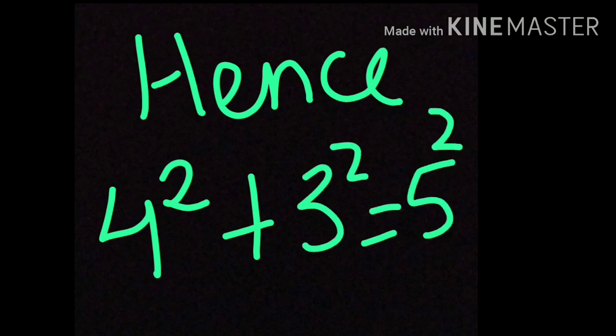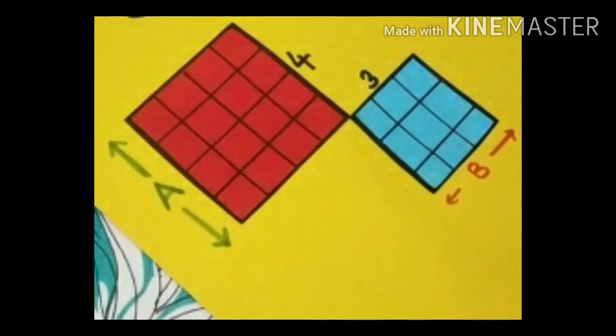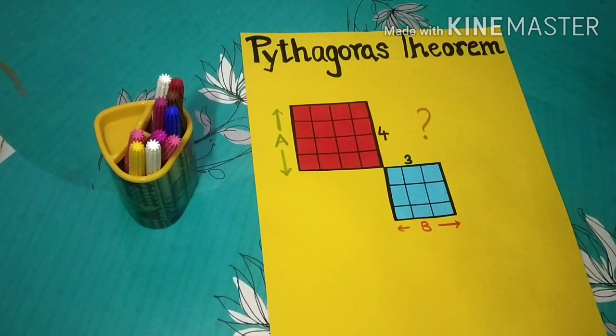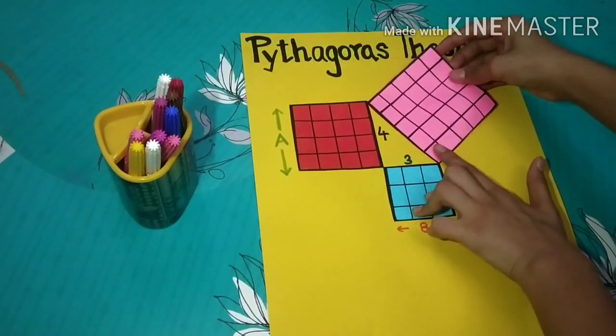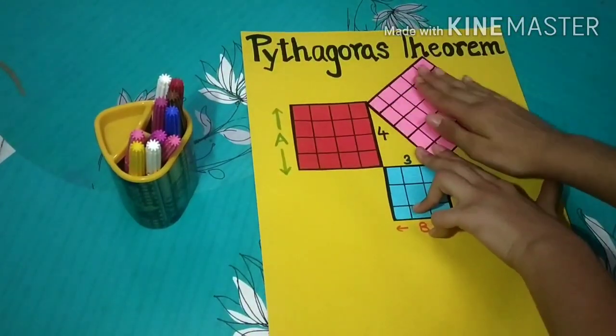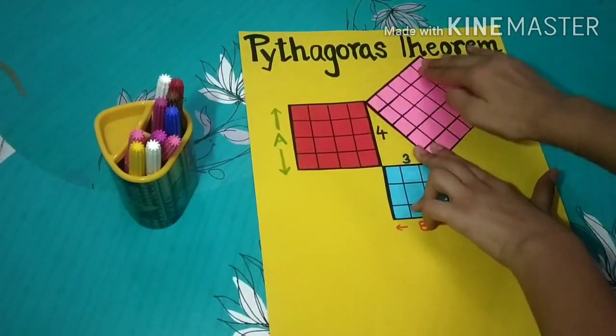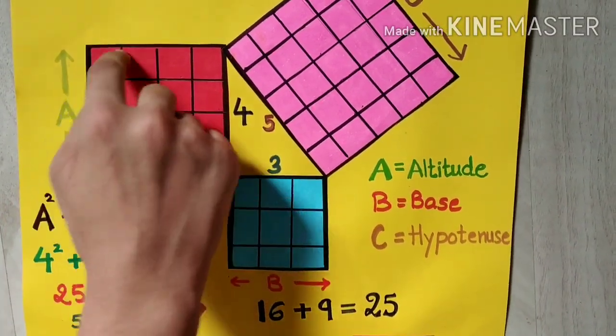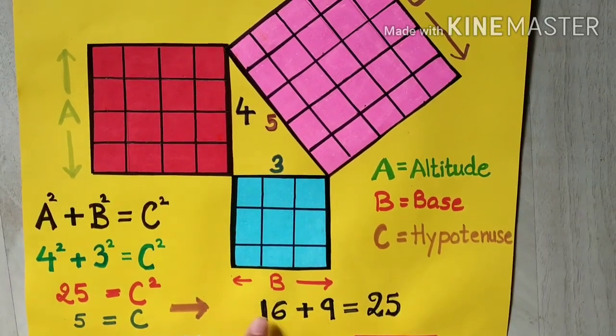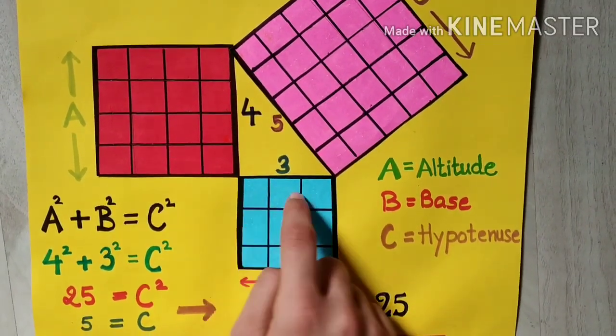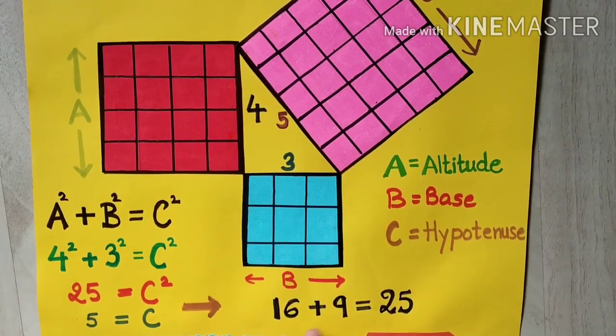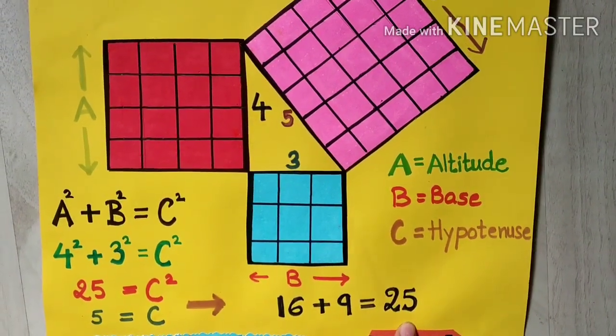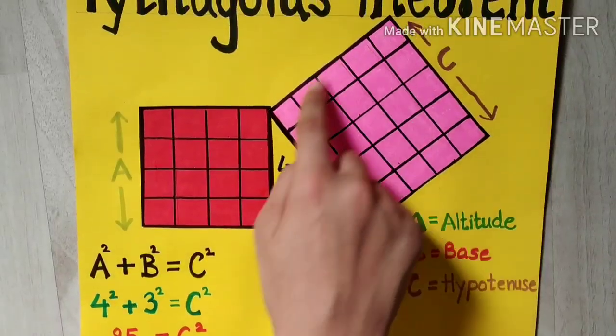Thus proving the Pythagorean theorem. Put the square with side 4 centimeters across the altitude and side with 3 centimeters across the base. Since using the Pythagorean theorem we have proved C equals 5, put this square with each side 5 centimeters on the hypotenuse. Counting the small squares on the altitude is 4 squared equals 16. Number of squares on the base is 3 squared equals 9.